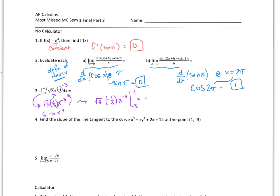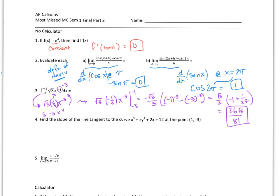Cleaning this up, we put negative √3 over 3 on the outside, and evaluate: negative 1 to the negative 3 minus negative 3 to the negative 3. This becomes negative √3 over 3 times negative 1 minus negative one twenty-seventh, which is plus one over 27. That all cleans up to be 26√3 over 81.